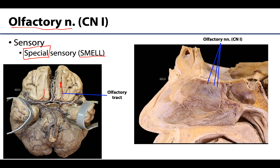The olfactory tracts are what we most clearly see associated with the brain. The olfactory bulbs and tracts are anterior extensions of the forebrain, making this nerve unique in that we refer to it as a cranial nerve. In summary: the olfactory nerve is cranial nerve 1 and carries special sensory fibers associated with smell.